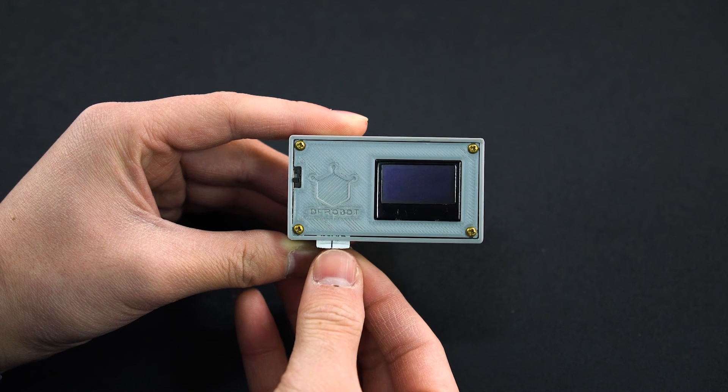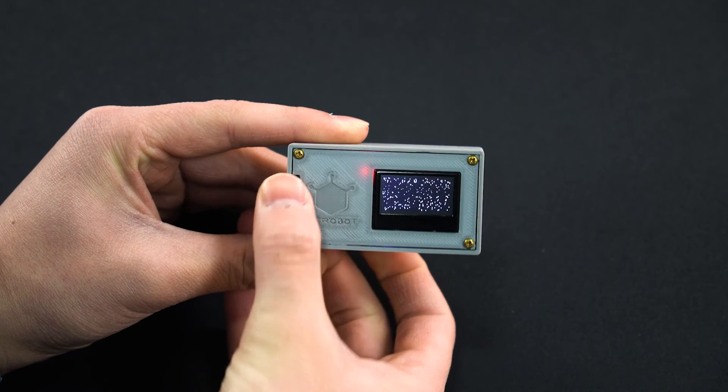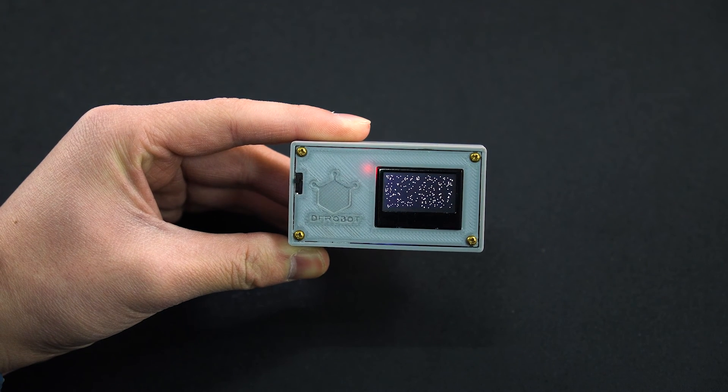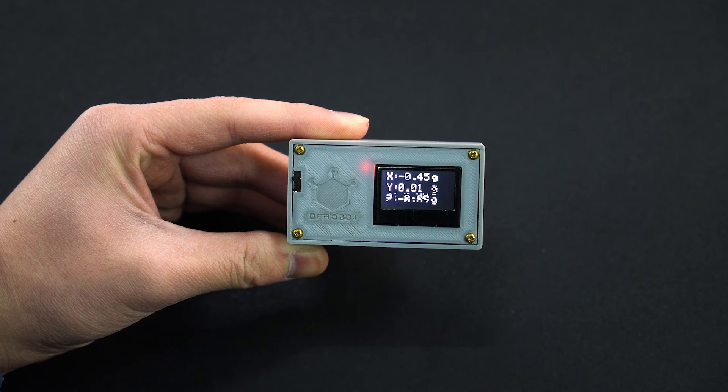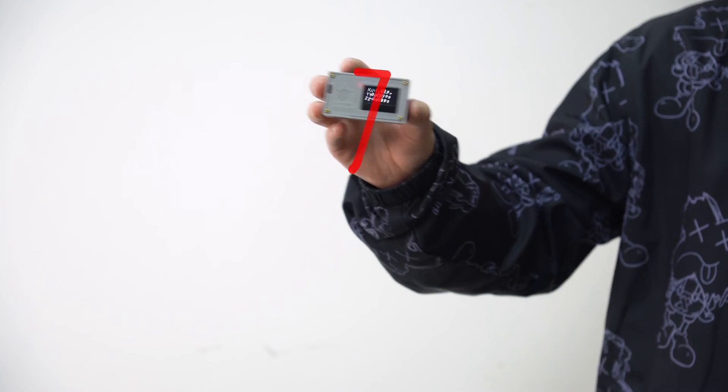Then, the data of the three axes will be saved onto the microSD card and displayed on LCD in real-time. Well, the recorder is done. Let's record motions with it.